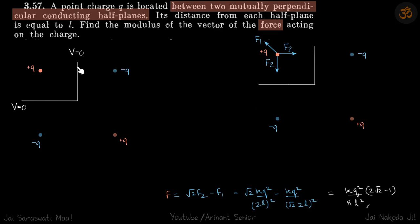By the mirror image method, opposite to this conducting plane we can put an imaginary charge minus q, and opposite this plane also we can put a minus q charge. Now we need to put a plus q charge here as well.